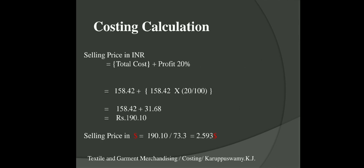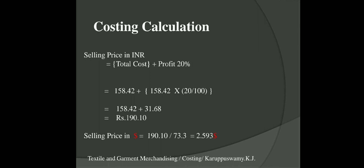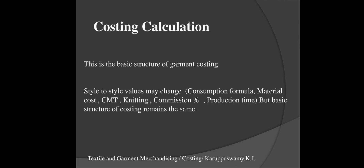The selling price in rupees is total cost plus 20% profit: 158.42 + 20% of 158.42 = profit of 31.68 rupees, giving a selling price of approximately 190.10 rupees. To convert to dollars, divide by the dollar value of 73.3 — giving a selling price of 2.593 dollars. This is the basic structure of garment costing. Style to style the values may change — fabric consumption, material cost, CMT, knitting cost — but the basic costing structure remains the same.